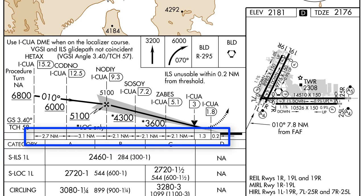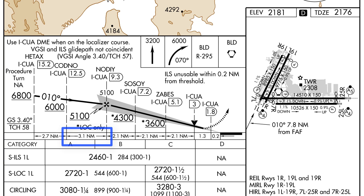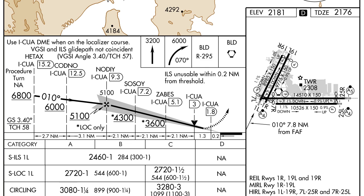The mileage scale at the bottom of the profile view indicates the distance between each point specified. It does not give you a total distance from the runway threshold. Instead, you can see from Condo to Nodoy is 3.1 nautical miles, from Nodoy to Sassoy is 2.1 nautical miles, and Sassoy to Zabes is 2.1 nautical miles. You can add up all the mileage to find your distance from the threshold; however, it may not be a precise number.